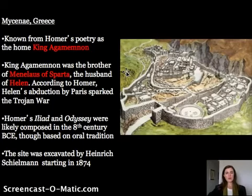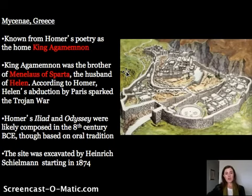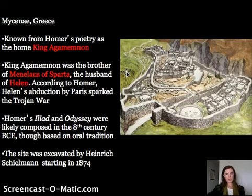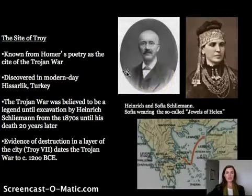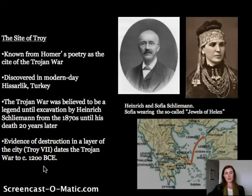The most famous site is Mycenae, known from Homer's poetry as the home of King Agamemnon, brother of Menelaus, who was the husband of Helen, who according to legend was abducted in the Trojan War. If the Trojan War really happened, it was probably at a place called Hisarlik in modern-day Turkey, around 1200 BCE — when we have a level of destruction at that city. It doesn't seem as grand as portrayed in the poetry. The Iliad and Odyssey were composed later, passed down through oral traditions, and the site was excavated by Heinrich Schliemann, seen here with his wife wearing discovered jewels.